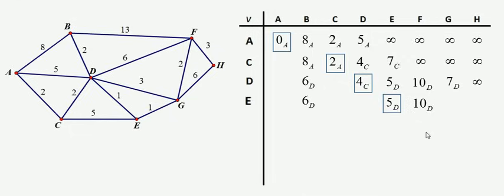I can get from E to G, though. So 5 plus 1 is 6. That's an improvement over the 7 that we had. So I mark a 6 here, and we came from vertex E. So that's the subscript. And I still can't get from E to H, so there's still no path yet that brings us to vertex H.